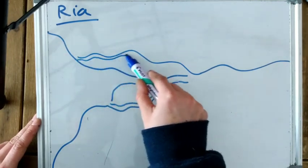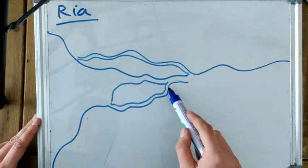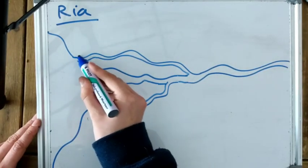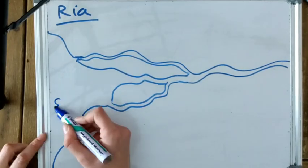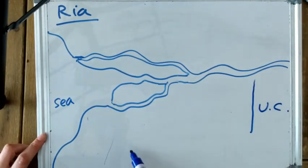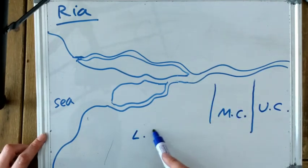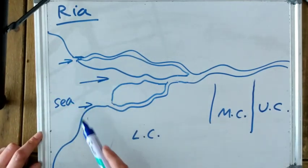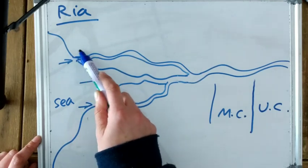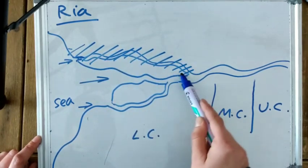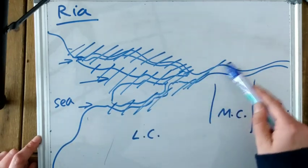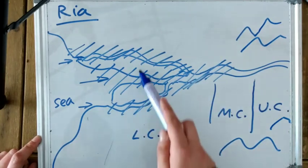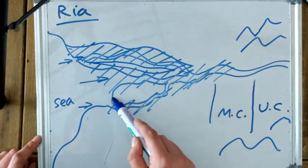So we've got this river valley here before it's been submerged. We've got the sea there, the mountainous upper course there, the middle course there, and the valley is kind of surrounded by hills. As the sea level rises, the sea floods the valley, leaving just the sides of the mountains poking out. The upper course doesn't get flooded — it's still pouring into the estuary because it's too mountainous and goes uphill. But the lower course is now a nice saltwater estuary.